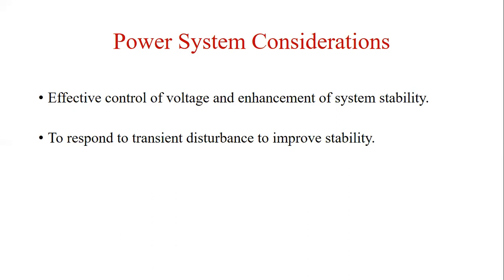Excitation systems have since undergone continuous revolutions. In the early 1960s, the role of the excitation system was expanded by using auxiliary stabilizing signals in addition to the terminal voltage error signal to control the field voltage to damp system oscillations. This part of excitation control is referred to as the power system stabilizers. Modern excitation systems are capable of providing practically instantaneous response with high ceiling voltage. The combination of high field forcing capability and the use of auxiliary stabilizing signals contribute to substantial enhancement of overall system dynamic performance.